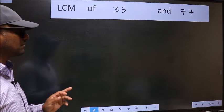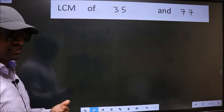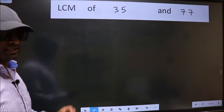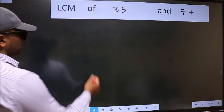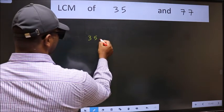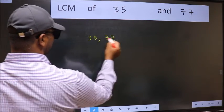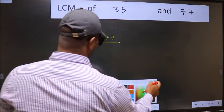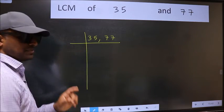LCM of 35 and 77. To find the LCM, we frame it in this way: 35, 77. This is step 1.